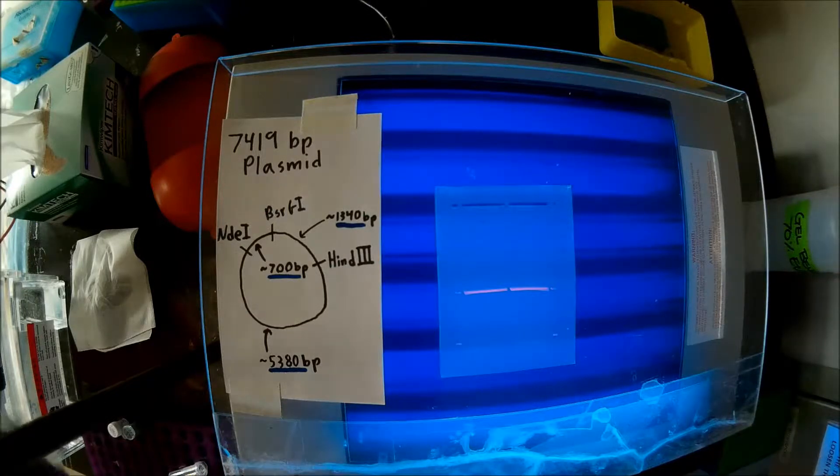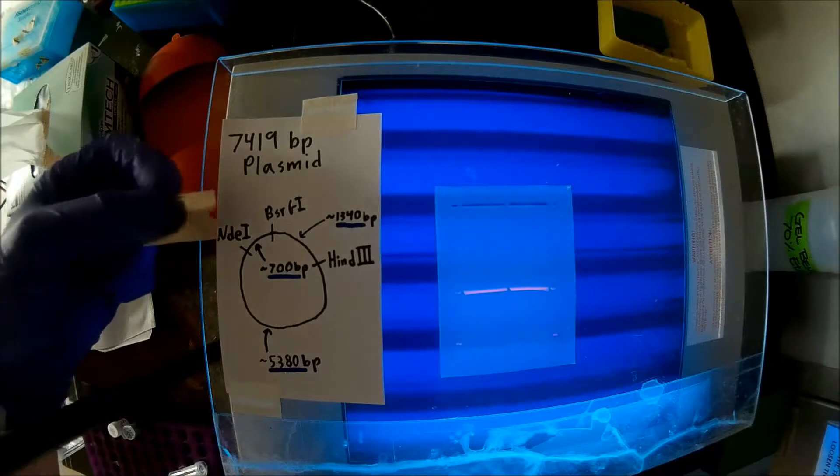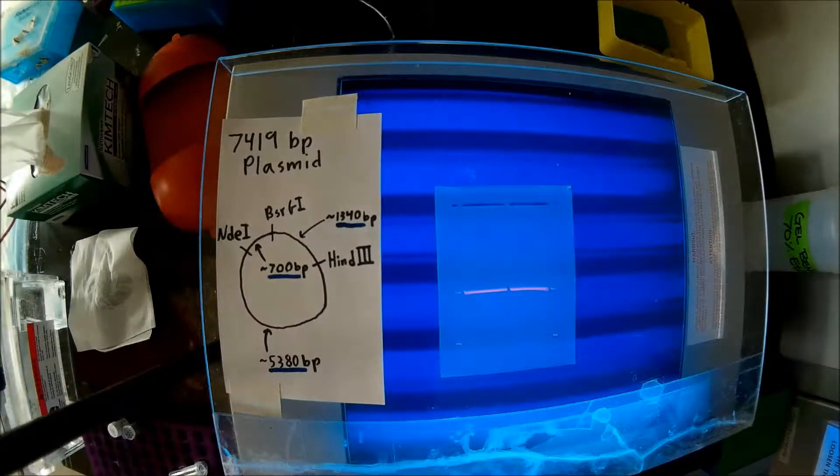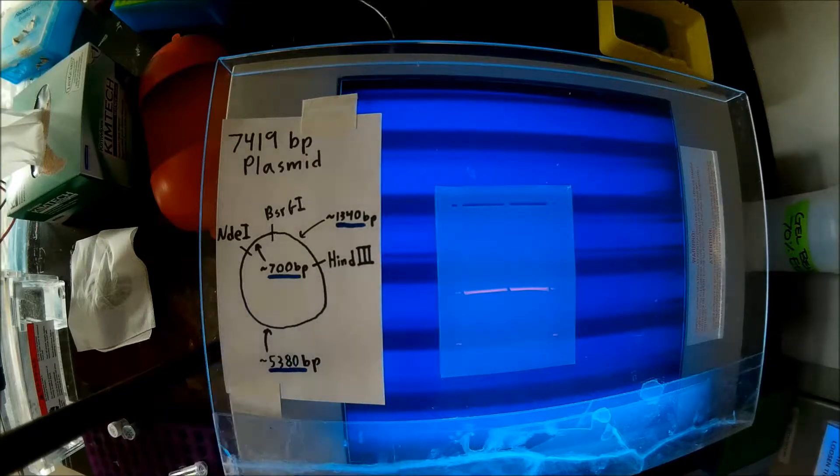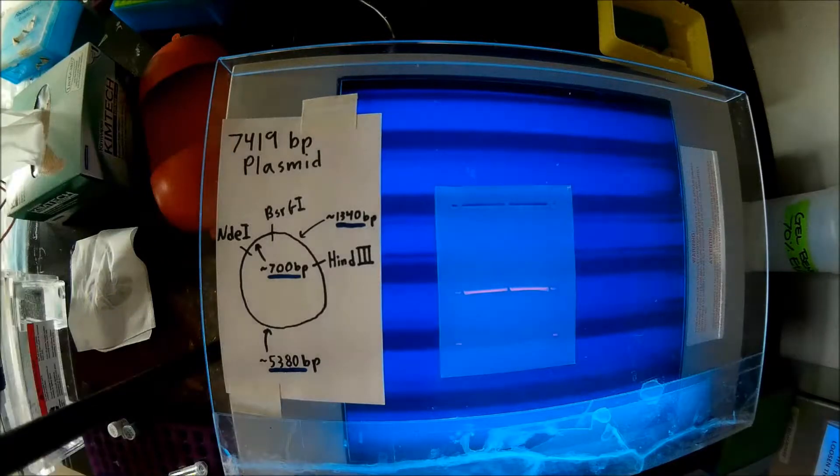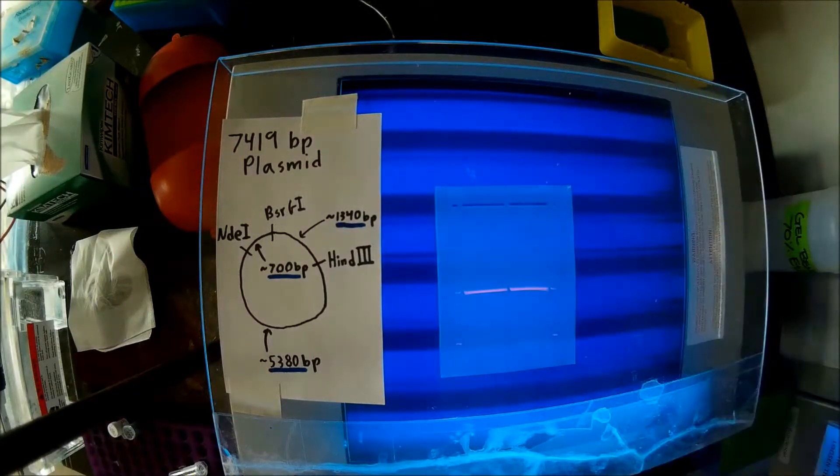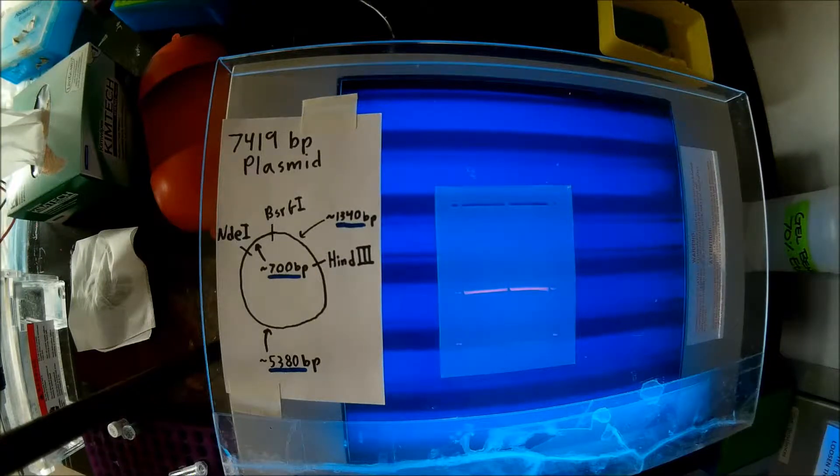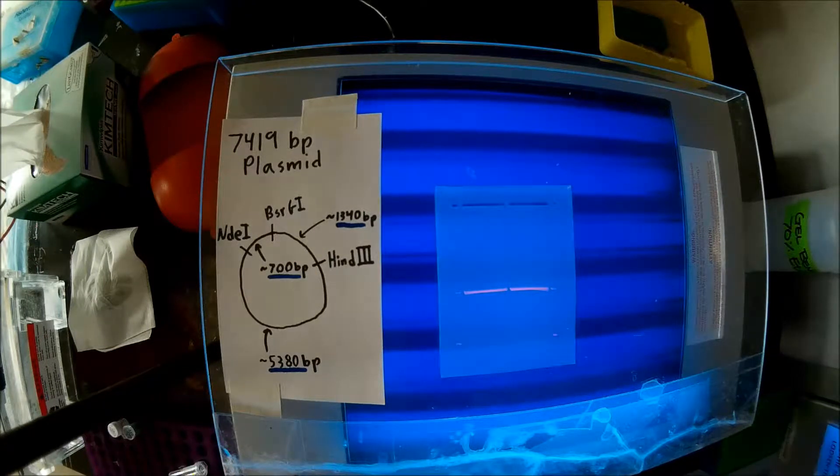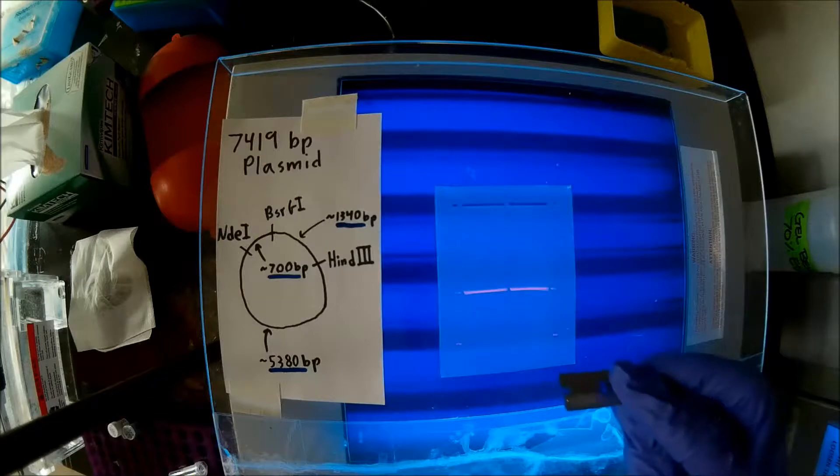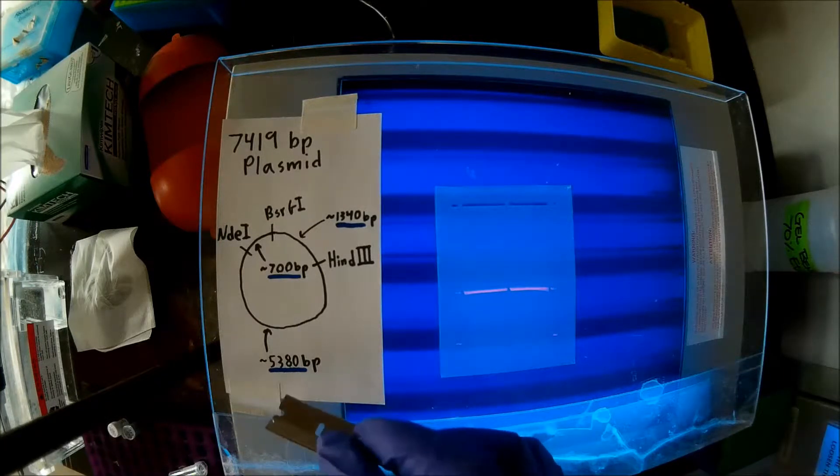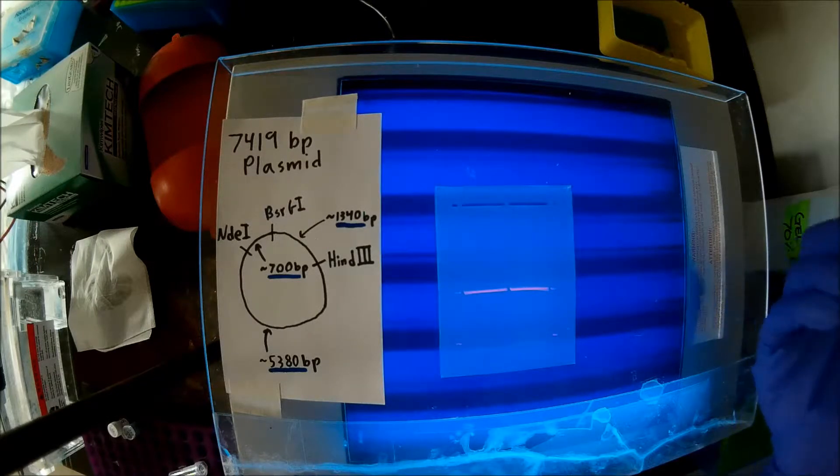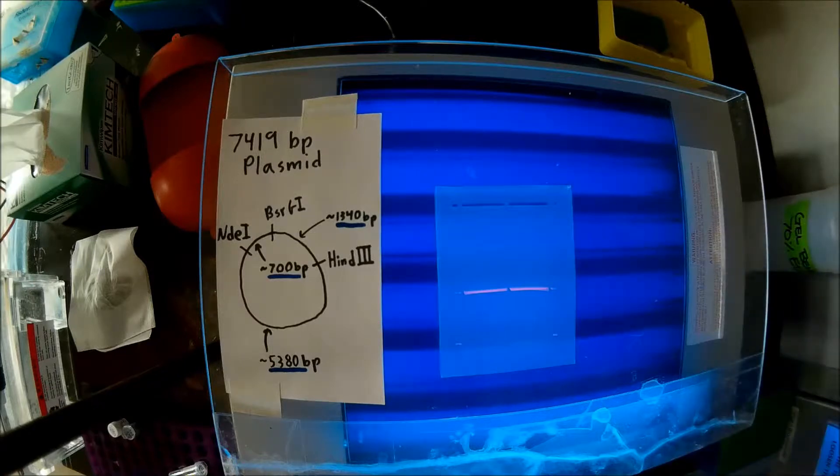But as you can see, I'm going to expect a 7,000 base pair band between the NDE1 and the BSRG1. I'm expecting about a 1,300 base pair band between the NDE1 and the BSRG1, and about a 1,300 base pair band between the BSRG1 and the HINDI3. I've already run the 700 base pair band off the gel. And I want to excise the 5,380 base pair band, or roughly 5,000 base pair band. So, that's that top band there.